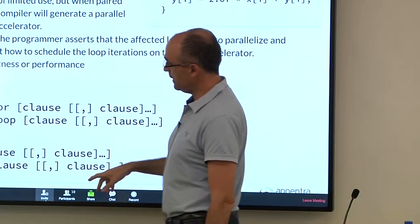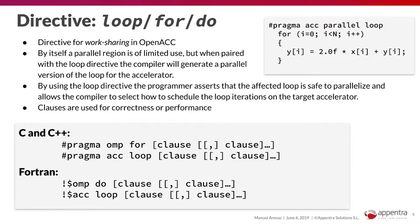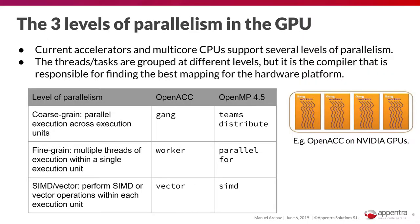So here I would just add that in Fortran, instead of the keyword for, you have the typical Fortran syntax of the do keyword. So for loop do loop. These are the keywords that you use for the directives in C C++ and Fortran and OpenMP and OpenACC.